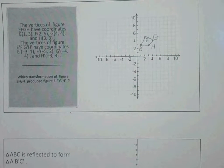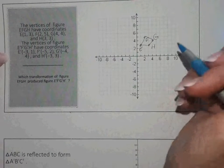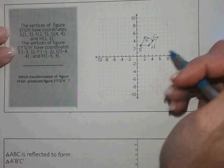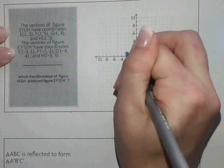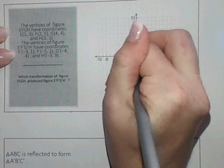Okay, so the vertices of the figure E-prime, F-prime, G-prime, and H-prime have coordinates of negative 3, 1. So that's E-prime.